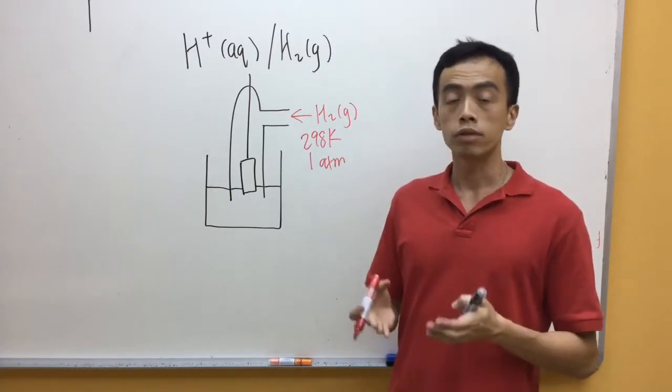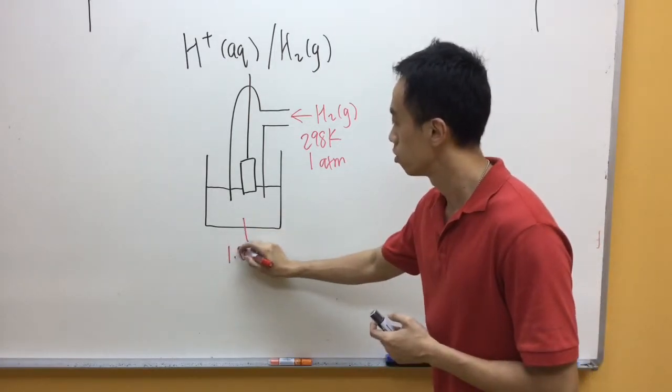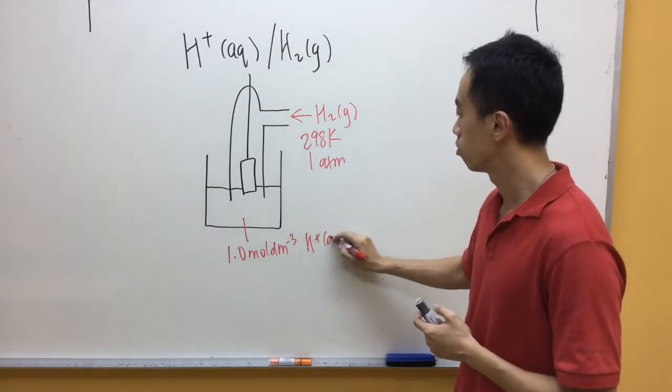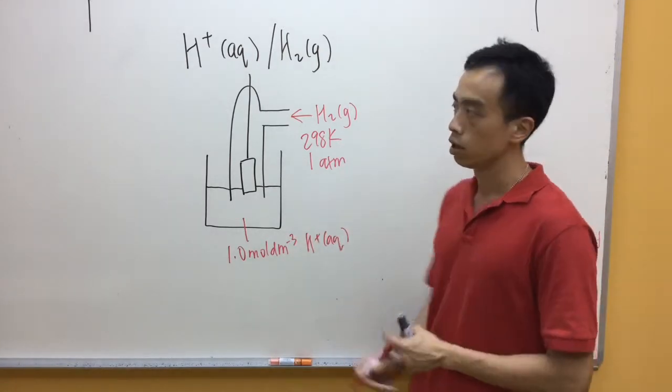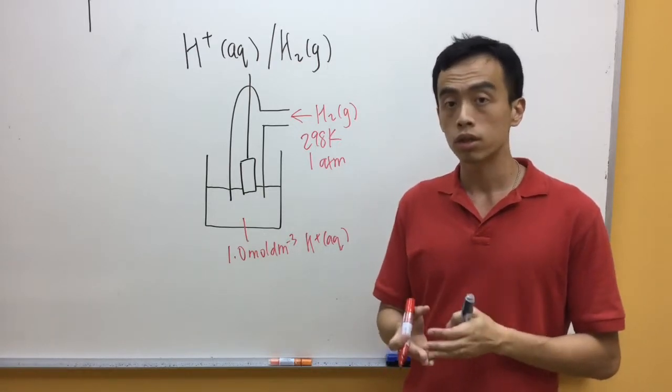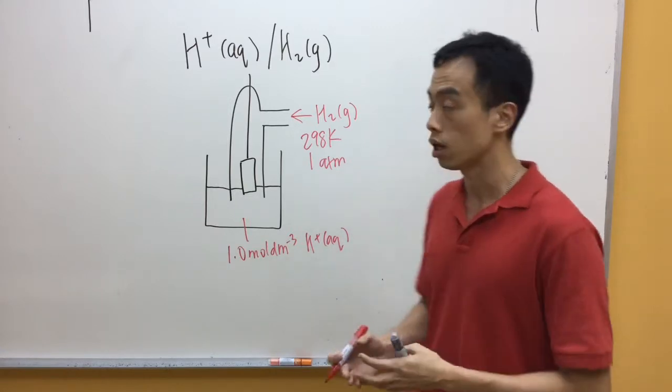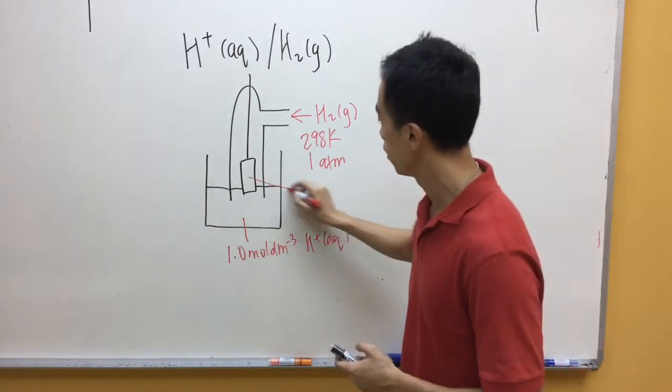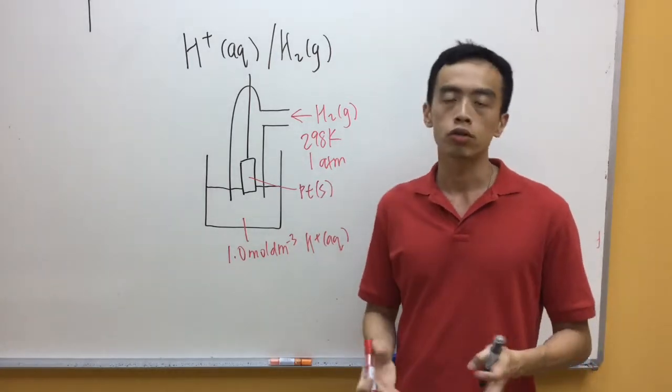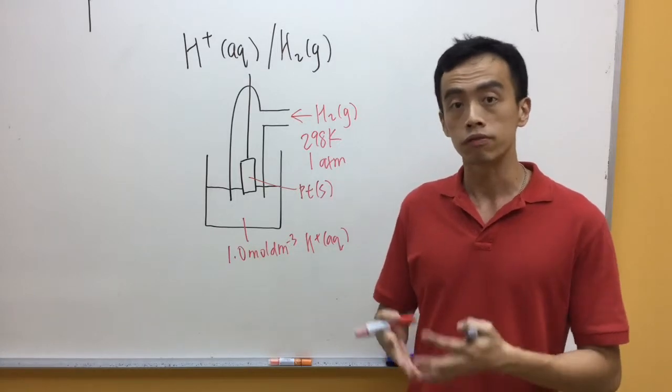Now again, the concentration for my H-plus solution, it has to be at 1 mol per dm cubed. What you notice in this case is we have to include an additional inert electrode, so that the equilibrium can be established between H-plus and hydrogen gas. And usually the choice of the electrode would be a platinum electrode, because it doesn't interfere with the reaction.